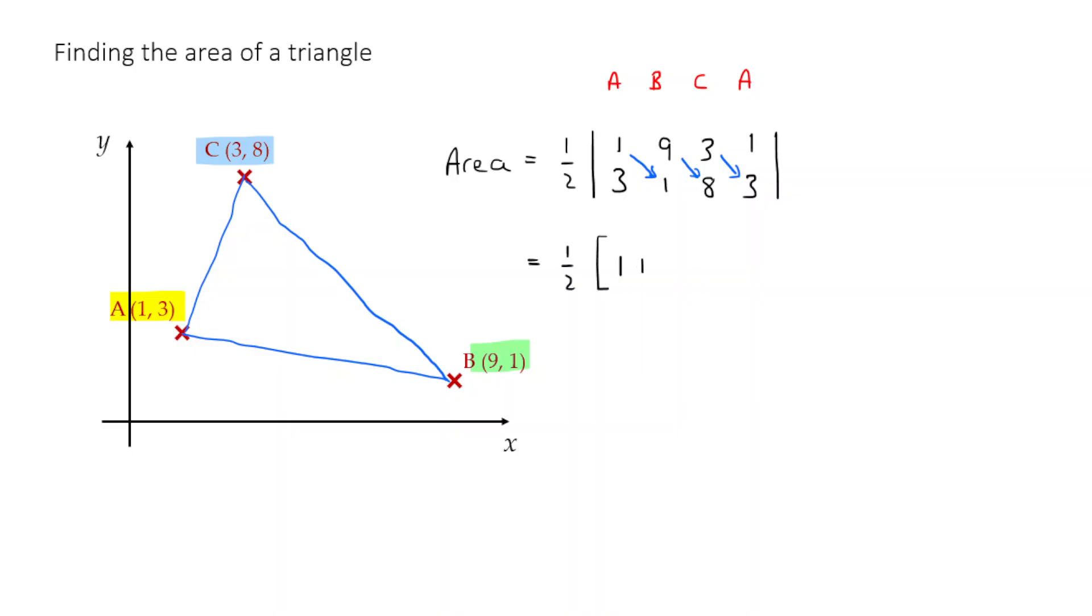So I'm going to get one plus nine times eight, which is 72, plus three times three, which is nine. So I've just added up those multiples together. One times one, nine times eight, three times three, and I add them all up.